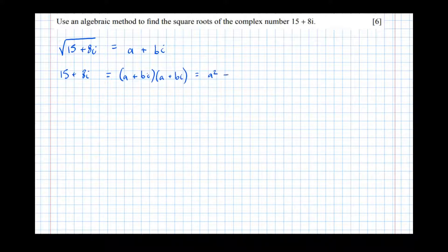...that's that there, plus abi, plus another abi. So this implies that 15 plus 8i equals a squared plus 2abi. And then i squared becomes minus 1, so that becomes minus b squared.